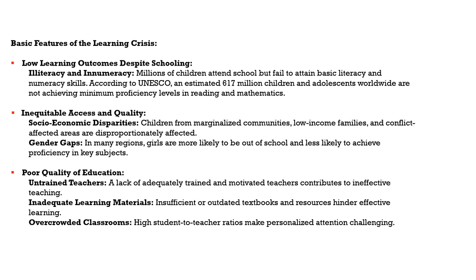What are the basic features of learning crisis? First, there are low learning outcomes despite schooling — illiteracy and innumeracy despite school enrolments rising. Many children are attending school but failing to attain basic literacy and numeracy skills. UNESCO has estimated that about 617 million children and adolescents worldwide are not achieving the minimum proficiency levels in reading and mathematics. There is also inequitable access and quality, as children from marginalized communities, low income families and conflict-affected areas are disproportionately affected. There are gender gaps — girls are more likely to be out of school — although when in school, girls seem to be outperforming boys in both primary and secondary schooling.